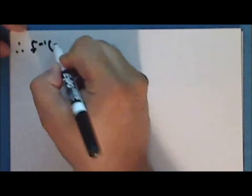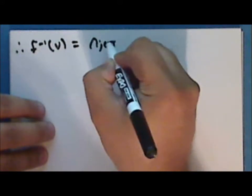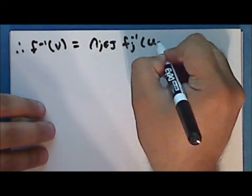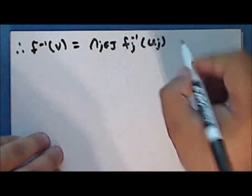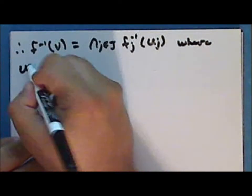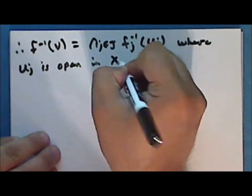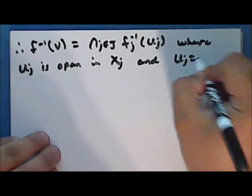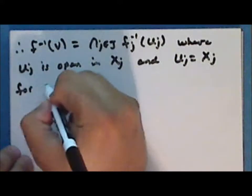Therefore the inverse image of V is an intersection of inverse images of the sets u_j under the j-th coordinate function, where u_j is open in the j-th factor space, and in fact u_j equals the entire factor space for all but finitely many indices j. We will use this lemma to prove a theorem.